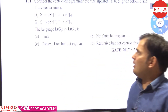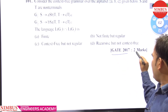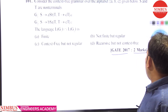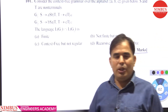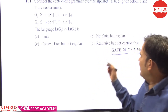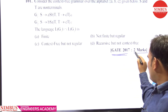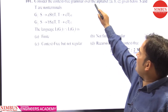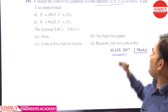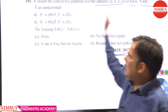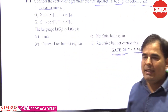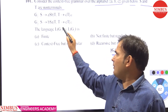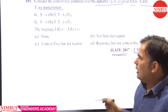This question was asked in GATE 2017 for two marks. Consider the context-free grammar over the alphabet {a, b, c} given below. S and T are non-terminals. The question asks: what is the language L(G1) ∩ L(G2)?